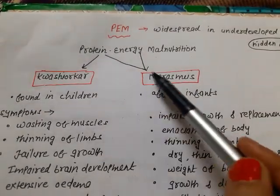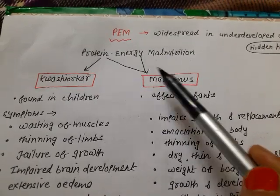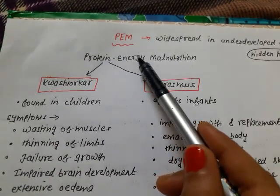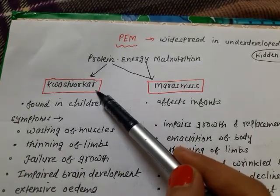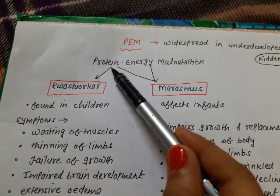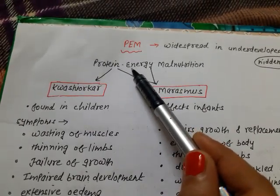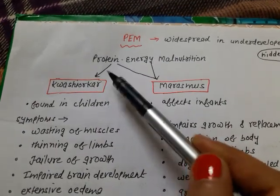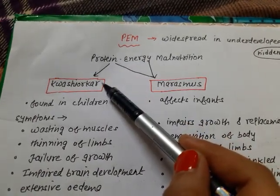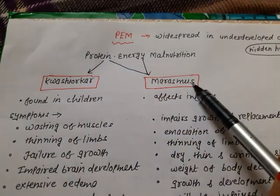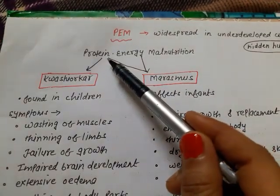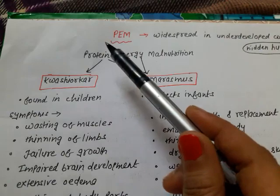Marasmus is produced by the deficiency of both protein and calories. Kwashiorkor, on the other hand, is produced by protein deficiency only, unaccompanied by calorie deficiency. That means in Kwashiorkor, the diet has calories but lacks protein. In Marasmus, the infant's diet is deficient in both protein and calories.